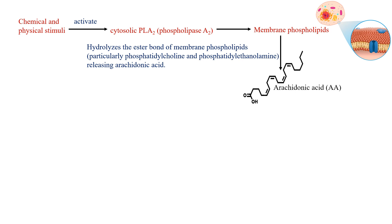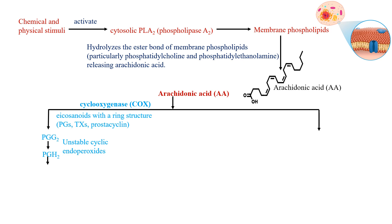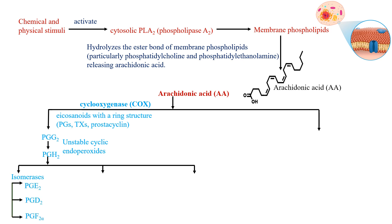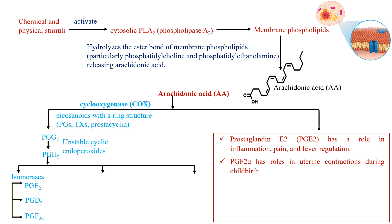After the COX enzymes work on arachidonic acid, they create prostaglandin G2 — an unstable cyclic endoperoxide. Prostaglandin G2 then transforms into its stable form, prostaglandin H2. Then isomerase enzymes convert PGH2 into PGE2, PGD2, and PGF2 alpha. Prostaglandin E2 plays a role in inflammation, pain, and fever regulation, while prostaglandin F2 alpha is involved in uterine contraction during childbirth.